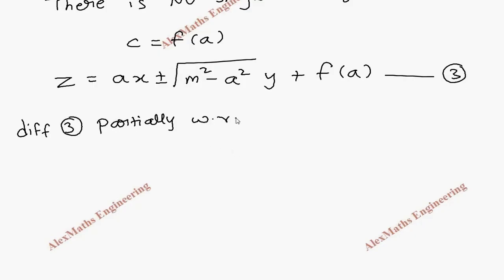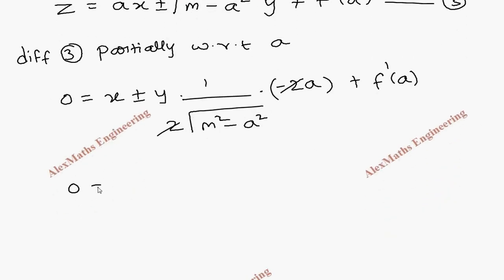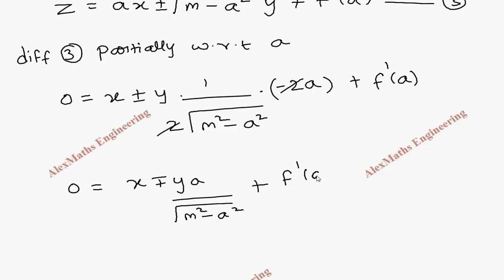Differentiating partially with respect to a, we get 0 = x, which stays as is, plus or minus y times the derivative of √(m² - a²). Using the chain rule, the derivative is 1/(2√(m² - a²)) times the derivative of (m² - a²). Since m is a constant, that gives -2a. We can cancel the 2s, and the last term is f′(a). Rewriting, we get: 0 = x ± (−ay)/√(m² - a²) + f′(a). This is the fourth expression.